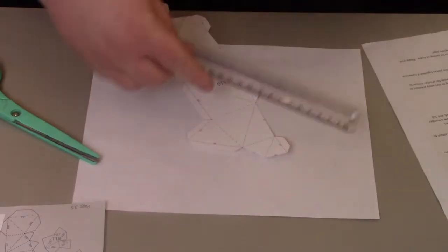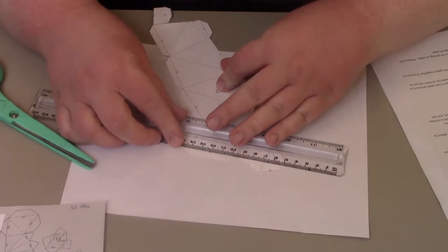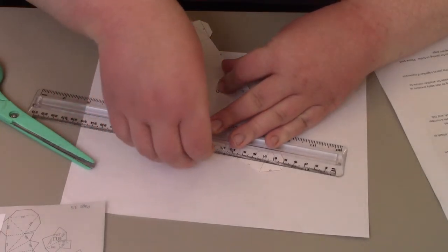A tip for folding: make all the necessary folds before gluing. Use a ruler to create clean folds.